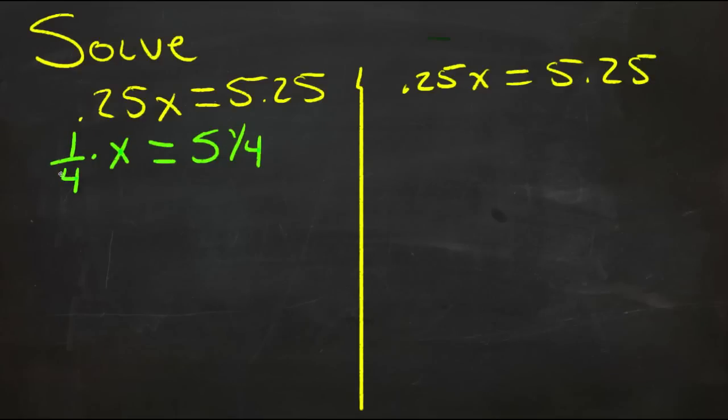Now to get rid of this 1 fourth over here on the left hand side, we're multiplying 1 fourth times x, so we'll do the opposite which is divide, and we'll divide by 1 fourth. Those two will go away and we'll have just x on the left, and then the right hand side we also want to divide by 1 fourth, which means we can invert and multiply. So we'll have 5 and 1 quarter divided by 1 fourth, which would be the same as 5 and 1 quarter times 4 over 1.